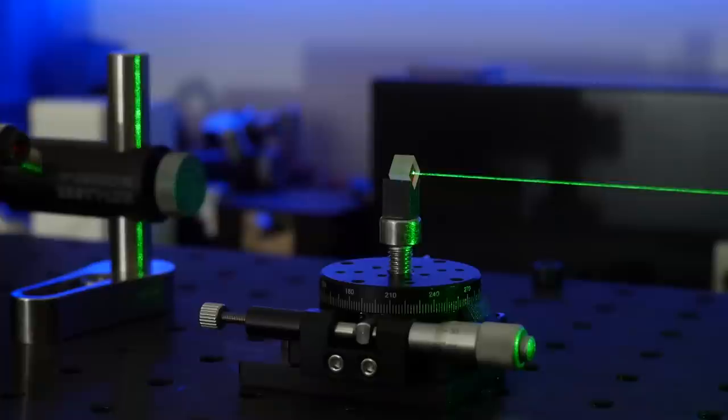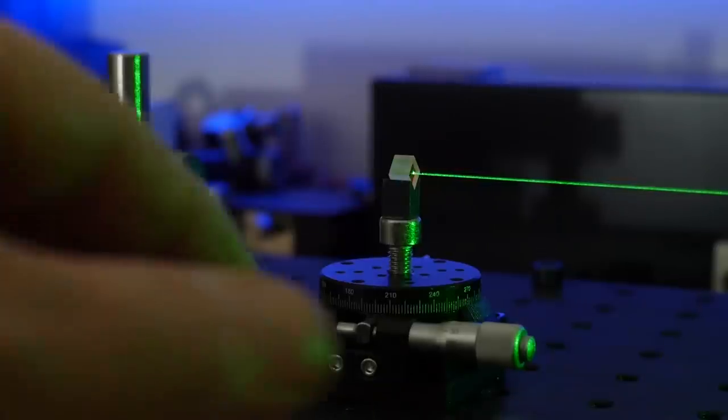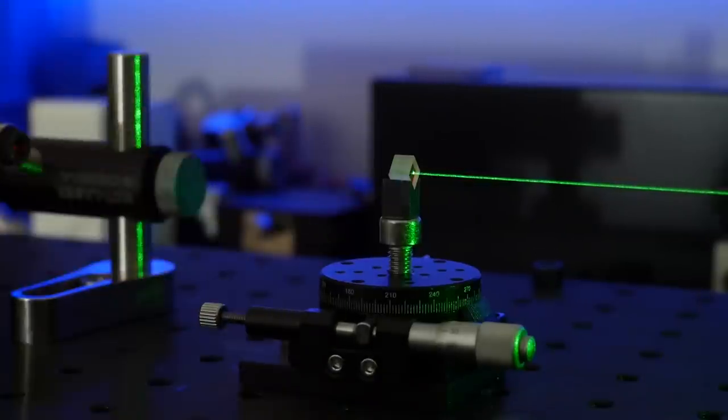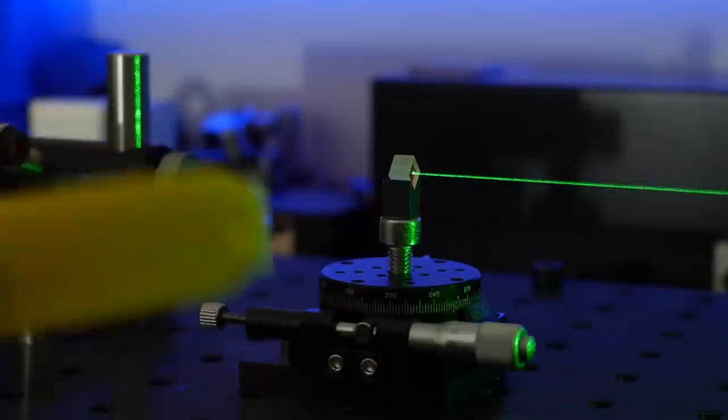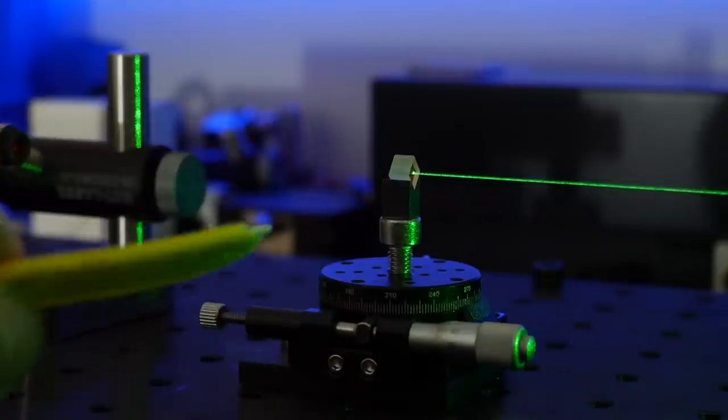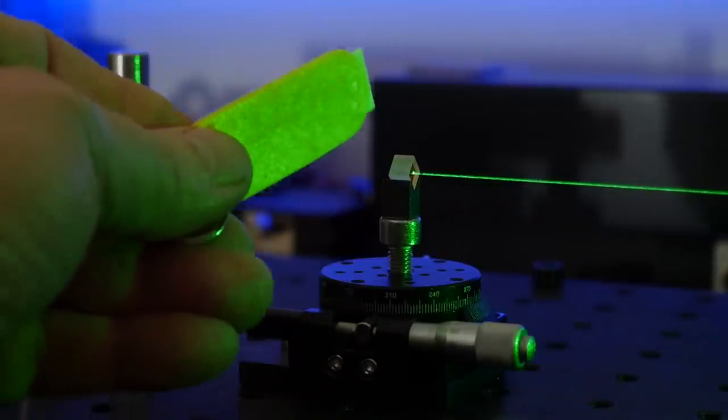And just like that we've got a brilliant green beam emerging out of this crystal. To prove that this is actually coming from the crystal and it's not a beam coming this way across the bench I can block off the infrared beam with this infrared detector card and the beam will cease.